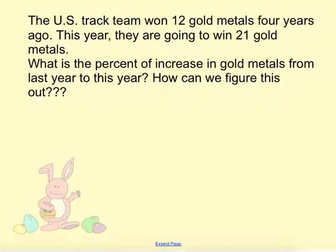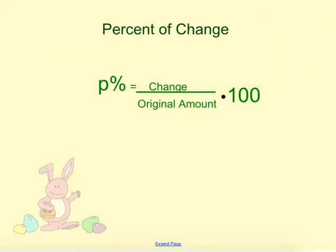The U.S. track team won 12 gold medals four years ago. This year, we predict they're going to win about 21 gold medals. What would be the percent increase in gold medals from last year to this year? Our formula to figure this out is percent change equals the actual change, how much we increased or decreased, divided by the original amount and then multiplied by 100.